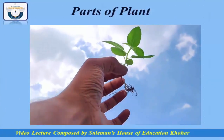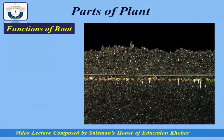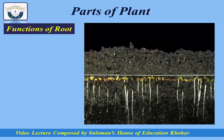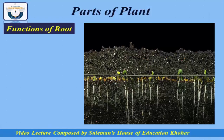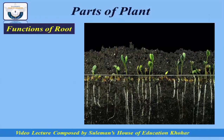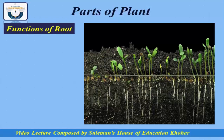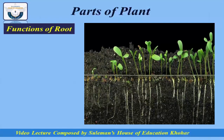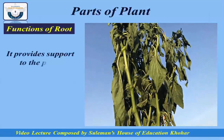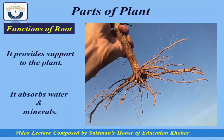Dear students, now we will discuss the different functions of parts of a plant. First, we will see the functions of a root. The root is an underground part of a plant. Its primary functions are: it provides support to the plant, and it absorbs water and minerals from the soil.